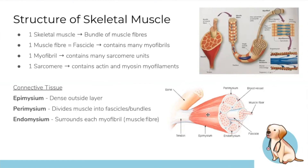Connective tissue holds the muscle together at different levels: endomysium surrounds individual myofibrils, perimysium surrounds the fascicles and bundles, and epimysium is the dense connective tissue layer on the outside of the whole muscle.